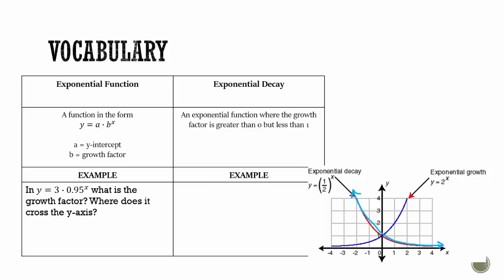Remember an exponential function has two parts, the a and the b. The a is your y-intercept, your b is your growth factor. And in order for something to be decay, your growth factor has to be greater than zero but less than one. So something like a half here, or we're going to look at one later today that's like 0.95. But those are exponential decay.